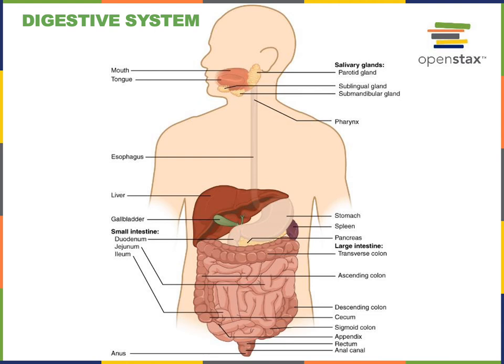The large intestine functions to absorb most of the remaining water from the contents it receives from the small intestine. It also absorbs some nutrients, especially electrolytes like sodium and potassium. It will form feces with the indigestible material, and then the feces are removed from the large intestine in the process of defecation.